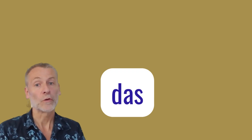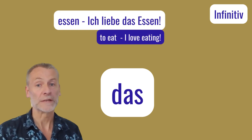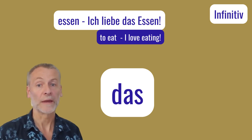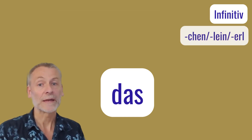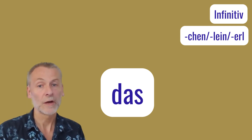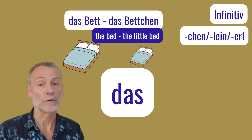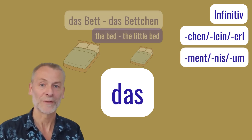And we have the neutral article, das, which we can use for every infinitive. So we can take a verb — the basic form of the verb, the infinitive — and we can make it a noun with the use of das. We put the article das in front of it, and then it is a noun. Also, we have endings like -chen, -lein, and in southern Germany and in Austria also -erl, which makes everything small and tiny. It's called the diminutive, and this is always neutral and always has the article das. And we also have some more endings for the neutral article, as you can see.